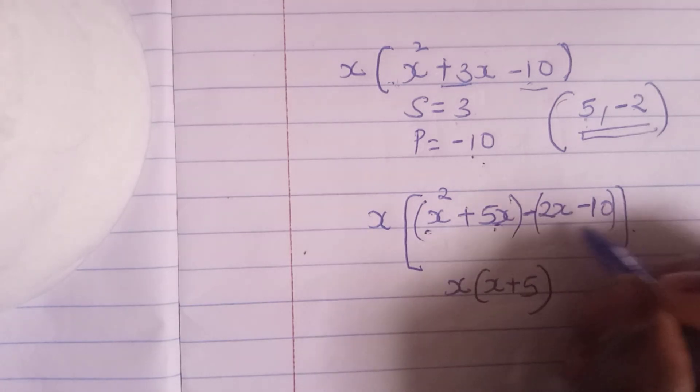So I will group them into 2 and factorize out. So my common factor here is x. So this will be x into x plus 5. And my common factor here is negative 2. So this will be x plus 5.